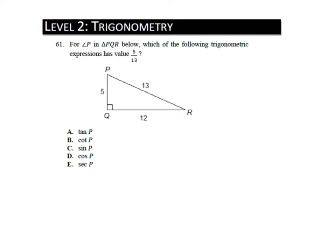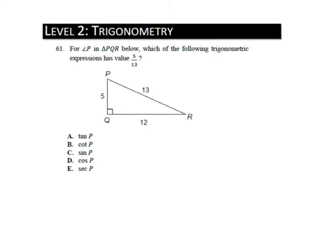This is the trig section for the practice ACT. For angle P in triangle PQR below, which of the following trigonometric expressions has a value of 5 over 13? Just in case you forget, we use this expression called SOH-CAH-TOA to remember trig functions. The SOH part means sine, opposite over hypotenuse.